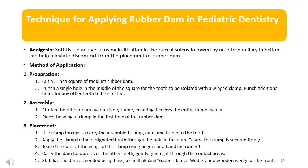Assembly: stretch the rubber dam over an ivory frame, ensuring it covers the entire frame evenly. Place the winged clamp in the first hole of the rubber dam. Placement: use clamp forceps to carry the assembled clamp, dam, and frame to the tooth. Apply the clamp to the designated tooth through the hole in the dam, ensuring it is secured firmly. Tease the dam off the wings using fingers or a hand instrument. Carry the dam forward over the other teeth, gently guiding it through the contact areas. Stabilize the dam as needed using floss, a small piece of rubber dam, or a wooden wedge at the front.